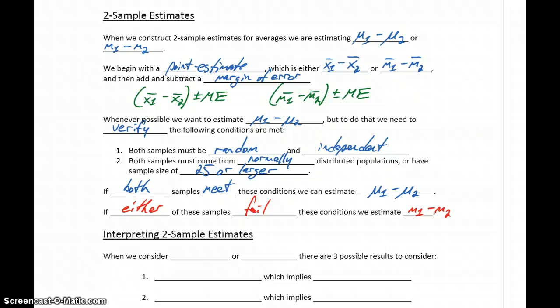Similar to one-sample estimates, we'll assume the first condition is met, so it'll be up to us to verify condition 2. We'll be checking sample sizes as our first resort, and then if we have too small of a sample size, we'll look at using QQ plots to assess normality.